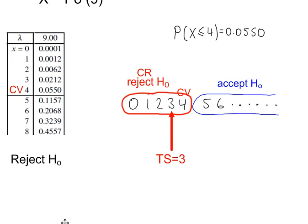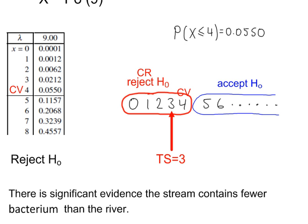And now we need our conclusion. Reject H0. There is significant evidence the stream contains fewer bacterium than the river.